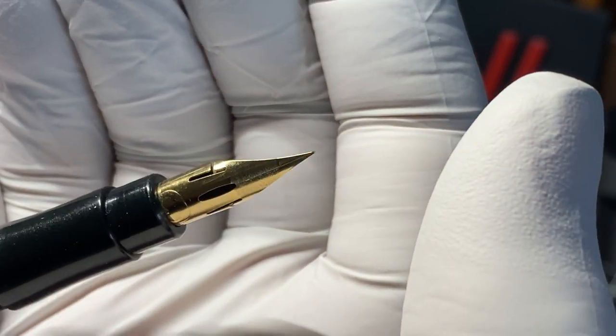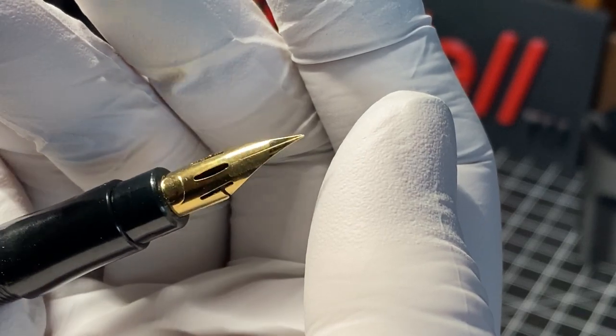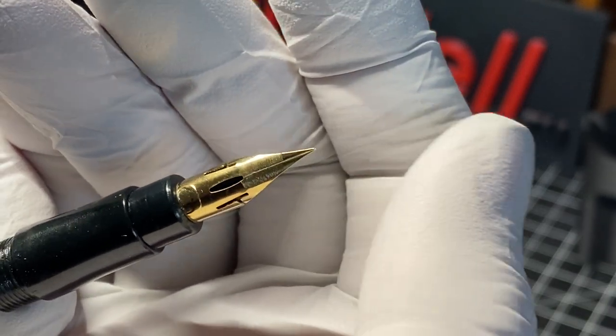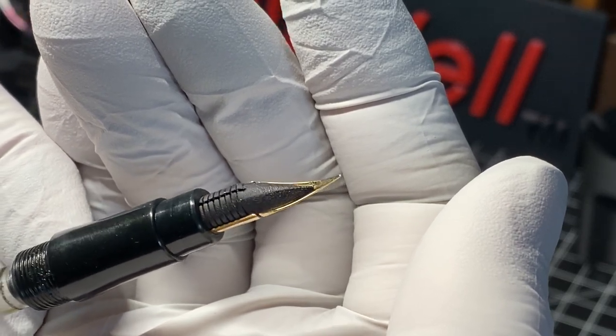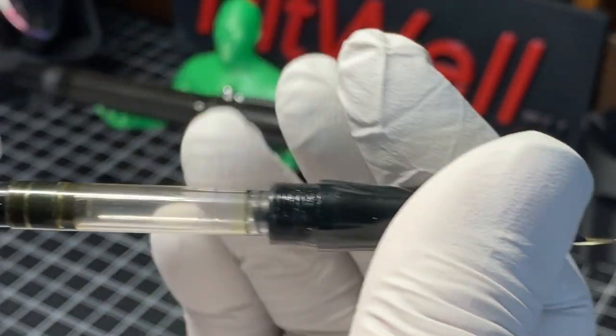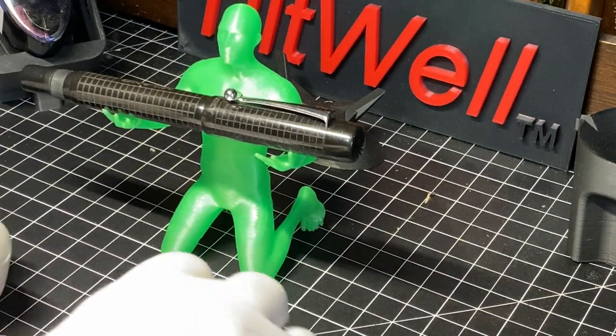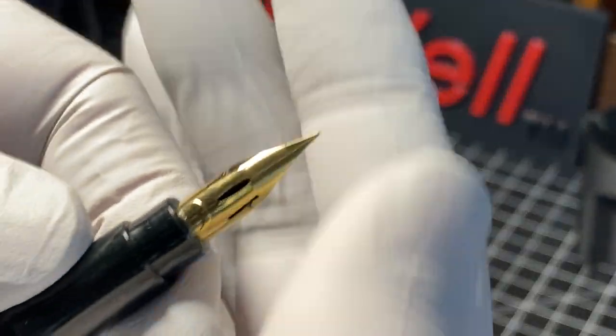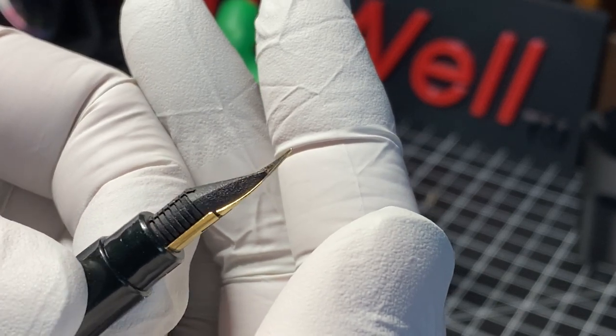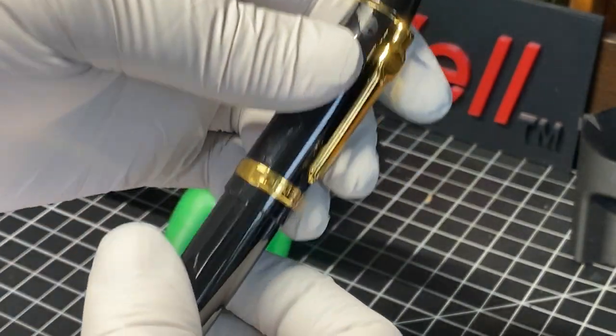It also came with two of these. It's a Zebra G titanium coated pen, which is really like a dip nib pen. But it has been adapted with a converter so it can fit in this pen. There were two of these. By the way, the titanium coating is supposed to make it just a little bit smoother. But more importantly, it'll make it last longer because these are steel.